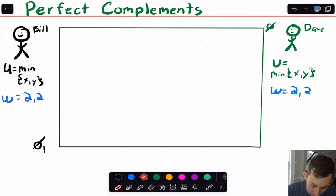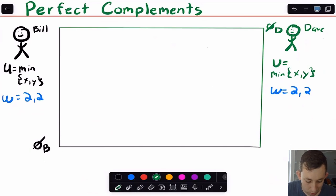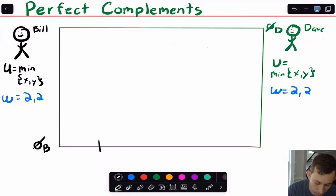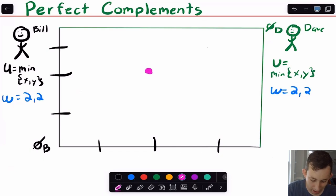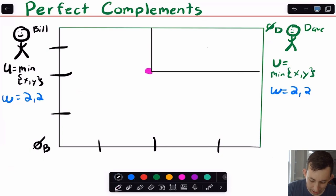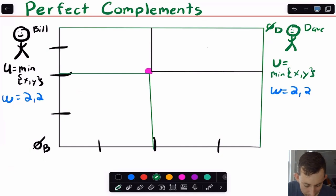For our final type of non-standard preference, we'll use perfect complements. Both people have the same preferences — utility is min(x, y) — equivalent to left shoe and right shoe. The setup is zero-Bill and zero-Dave on the respective origins, with the 2,2 endowment. The axes go one, two, three, four on both sides. Bill's indifference curve comes down in an L-shape, and Dave similarly has an L-shaped indifference curve from his origin.